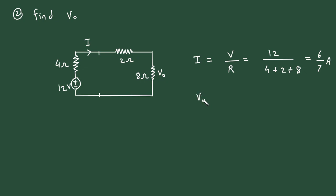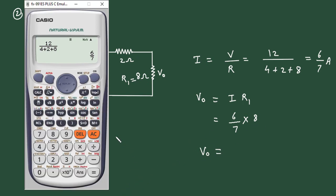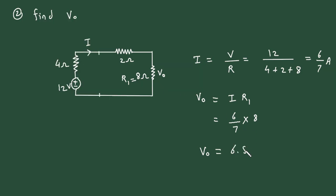Now we can find the value of VO. So VO is equal to again I into R. This R, it will be R 8 ohm. Let's say this is resistance R1. Let's say it has a value of R1, R1 is equal to 8 ohm. Now current value is 6 by 7 multiplied by R1. R1 is 8. So therefore VO is equal to 6 by 7 multiplied by 8. So it is 6.85 volt. This is the value of VO.